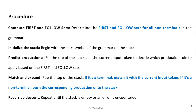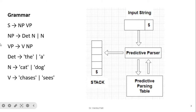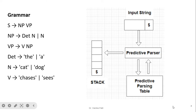Repeat until the stack is empty or an error is encountered. The input is ended by a dollar symbol, and the stack is initially empty. From the grammar, we first create the first and follow sets, and from those we create the predictive parsing table. The predictive parser takes input from the input string, decides which rule to apply based on the predictive parsing table, and push/pop operations on the stack take place accordingly.